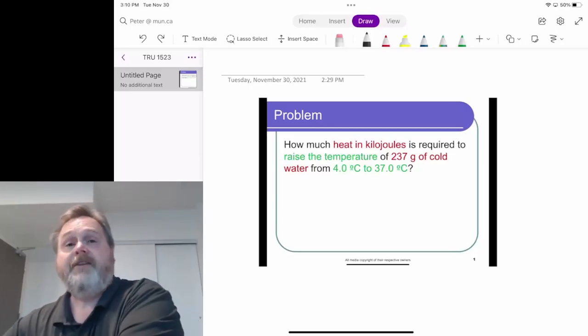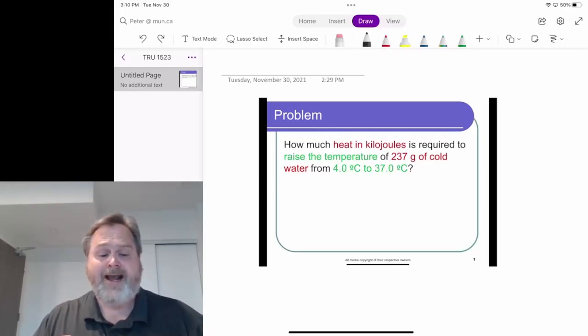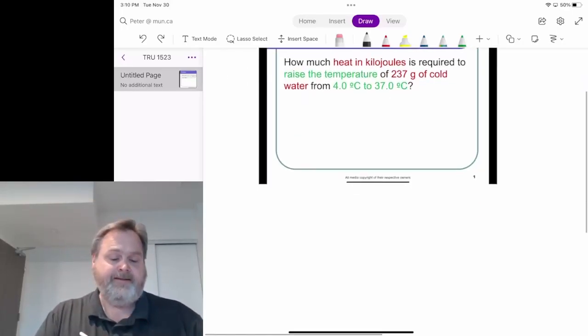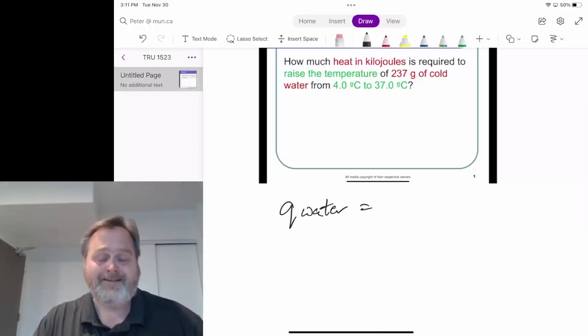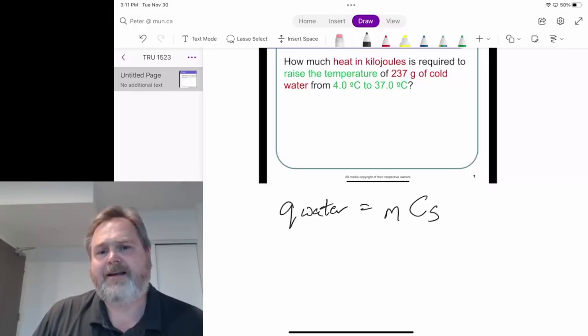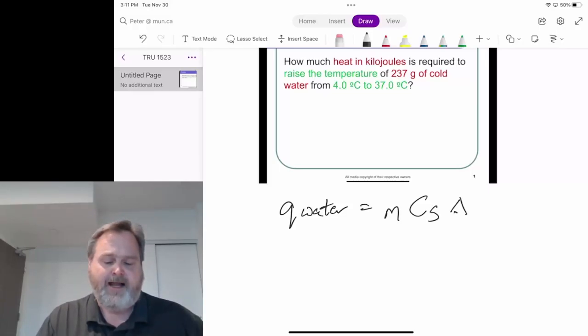So how we're going to solve this problem is through the idea of heat capacity. The heat for the water is going to depend on three things: the amount of water, in this case the mass; the specific heat capacity (we use specific heat capacity since we're measuring the amount in mass; if measuring in moles, we would use molar heat capacity); and that is multiplied by the change in temperature.